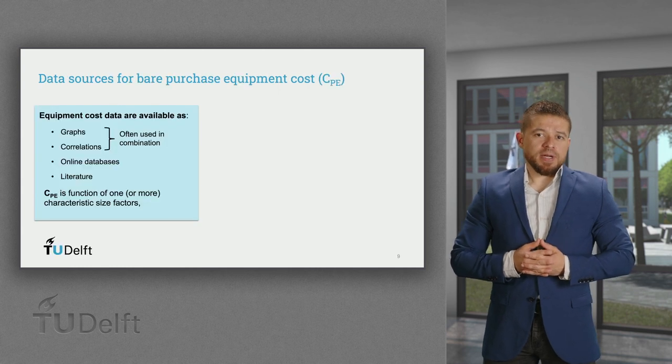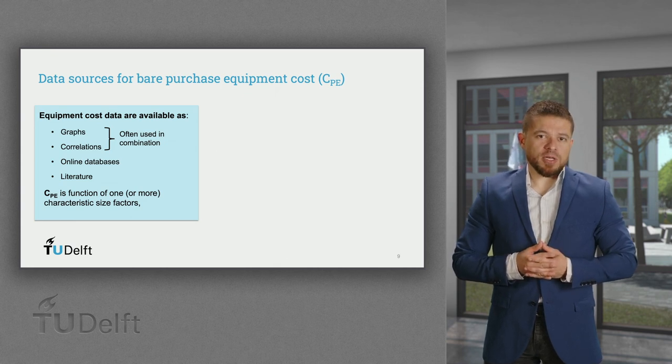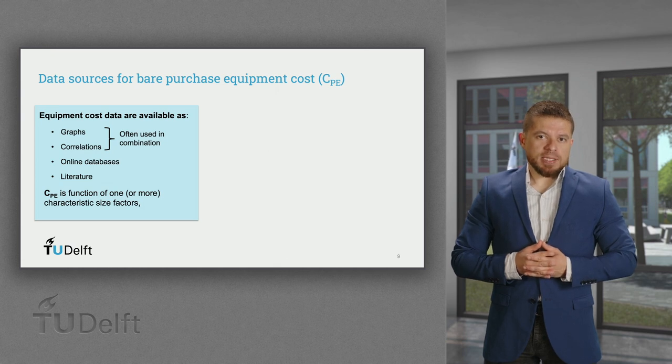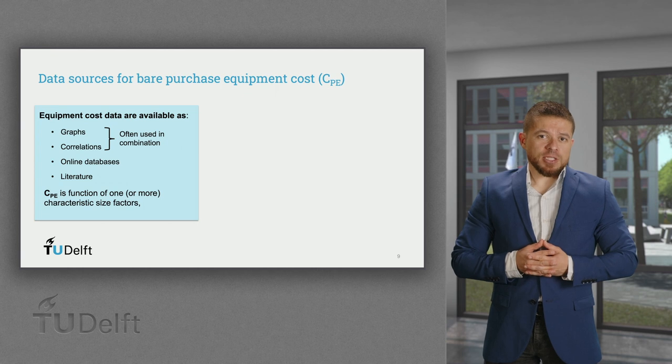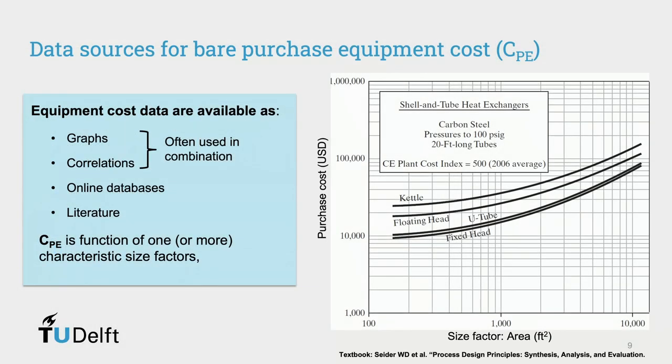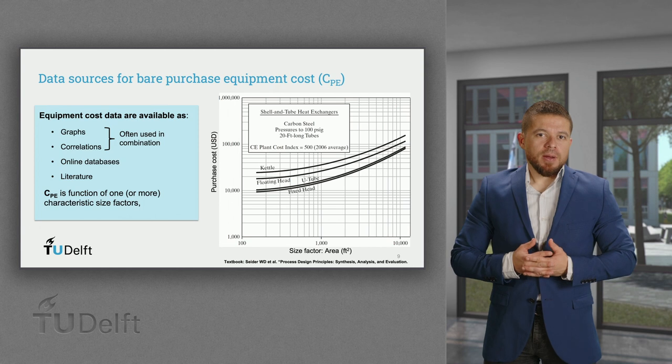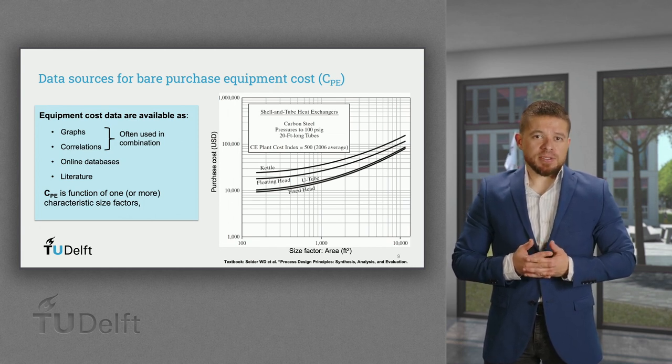Now, data for individual bare equipment cost can be retrieved from a wide range of sources. Textbooks on process design and economic evaluation usually have a combination of figures and correlations for multiple processing equipment, where you can directly read the equipment cost as a function of one or more characteristic size factors, like the heat transfer area for a heat exchanger, as you can see in the example, and also based on some design specifications like materials, pressure, or equipment configuration. Other sources of information are online databases, which are usually more updated. More examples on such websites are available in the additional materials of this course.